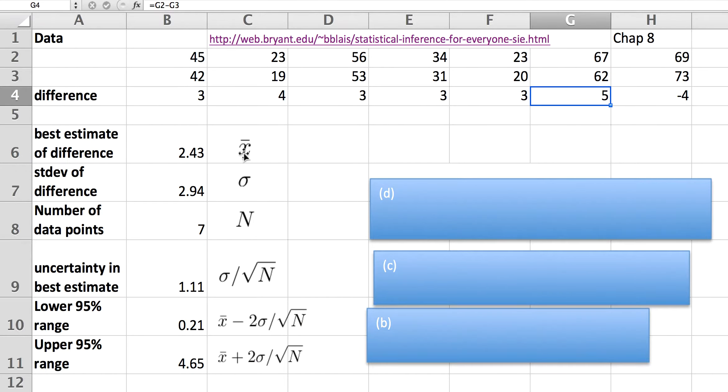The way we do it is we essentially get the best estimate of the difference, which is simply the mean. So all I'm doing is I'm just taking the average of these different values.